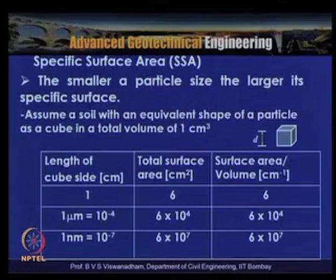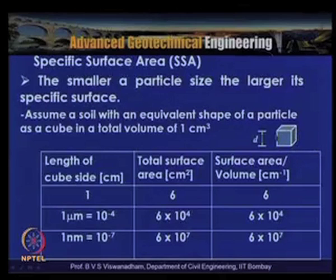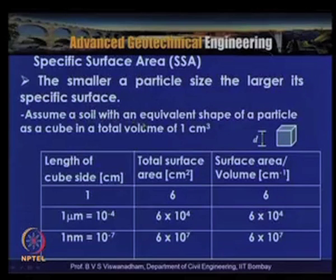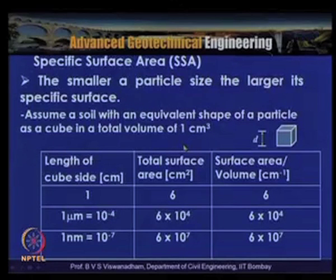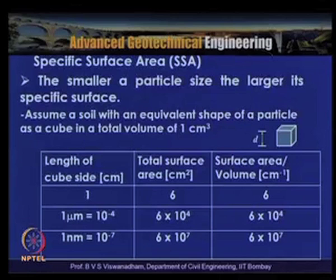Consider an equivalent shape of a particle as a cube. Assume a soil with a total volume of 1 cm³. If the length of the cube side is 1 cm, then the total surface area is 6 cm² and the surface area per volume is 6.